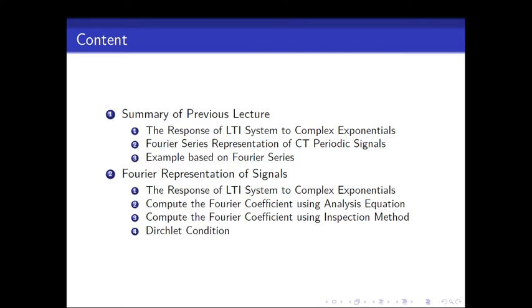Then we discuss how to compute the Fourier coefficient using the analysis equation directly. Another method, when your signal is in terms of cosine and sinusoidal signals, you can use another approach to compute the Fourier coefficient. That approach is known as the inspection method.